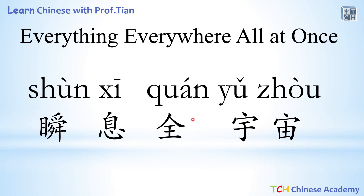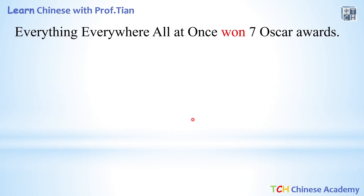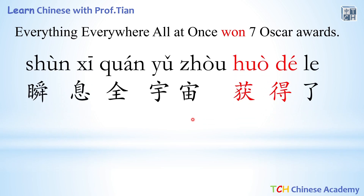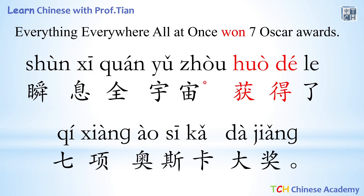Now let's see — this movie actually got seven awards. How do we express that in Chinese? Everything Everywhere All at Once won seven Oscar awards. We say 瞬息全宇宙获得了七项奥斯卡大奖. So 获得 is the word for win or won — it's more like gain or get in Chinese. 获得了 is the past tense. 七项 — 项 is the measure word for this kind of award. And 大奖 — we put 大, meaning big, because it is a big award.